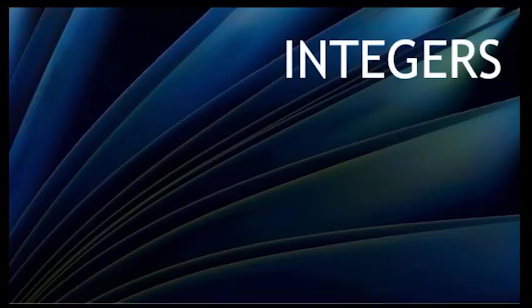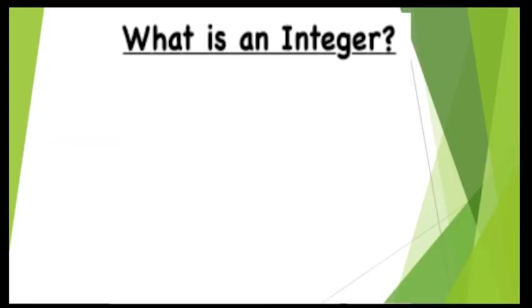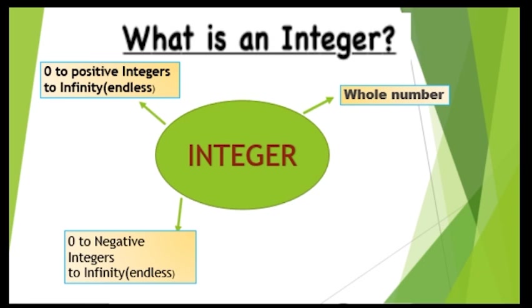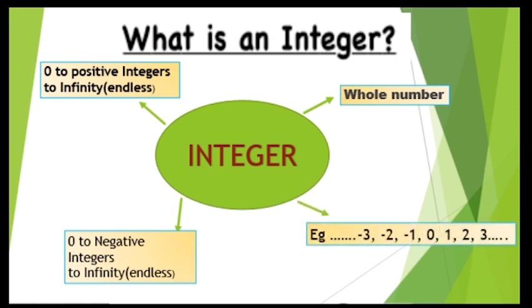Now, integers. An integer is nothing but a set of numbers. Integer consists of whole numbers. Whole numbers start with 0, 1, 2, 3, 4, and so on. Now, 0 is also an integer but neither positive nor negative. The set of numbers includes: before 0, minus 1, minus 2, minus 3, and after 0: 1, 2, 3, and so on.